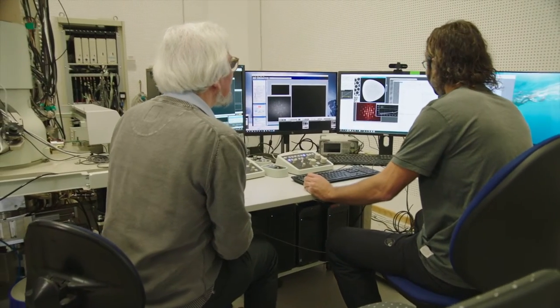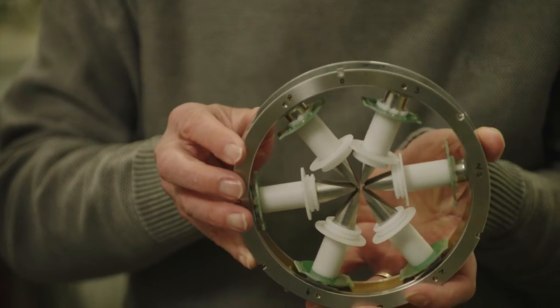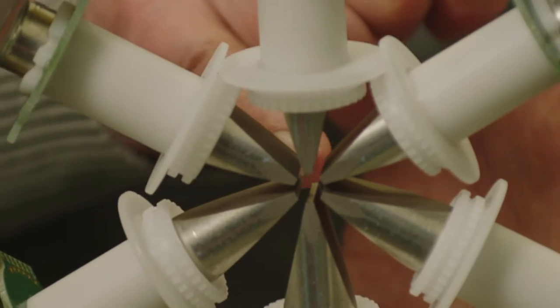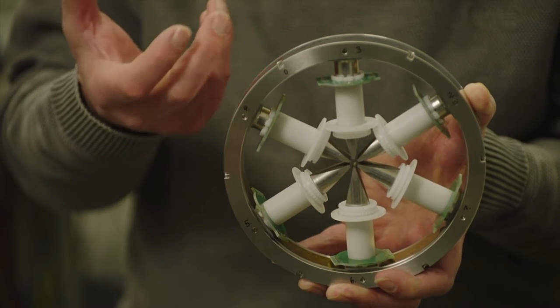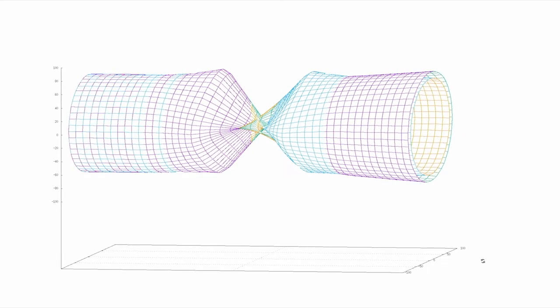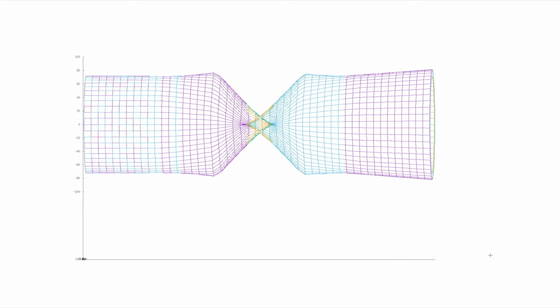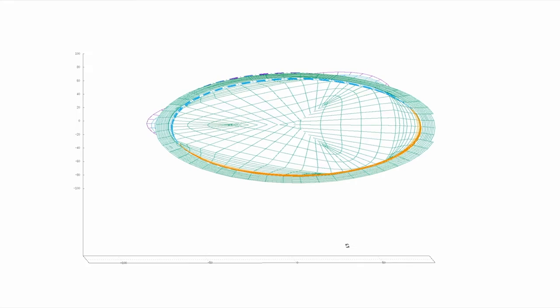Maximilian Haider realised Harald Rose's idea and designed the hexapole corrector. What you see here is a magnetic hexapole element where electrons passing through the centre react due to the hexapole field. A round electron bundle would be disturbed by a threefold asymmetry — we no longer have a round bundle but a threefold shape. And the important point is that one could actually see single atoms or interfaces at different objects. That was a breakthrough — I would call it revolutionary.